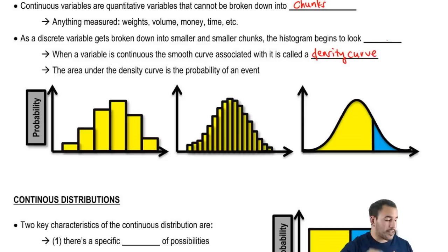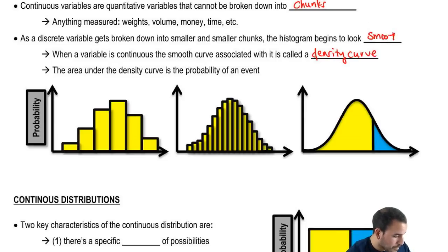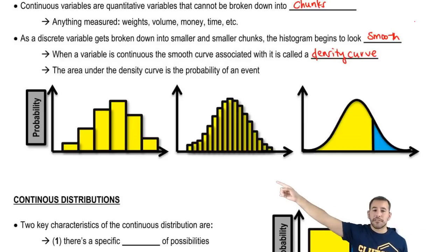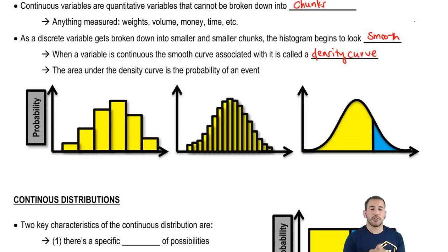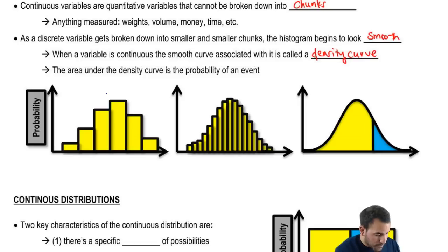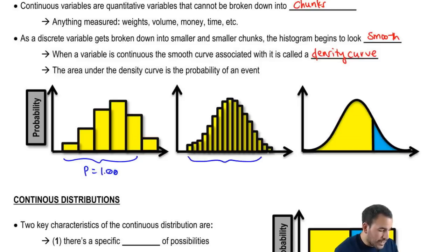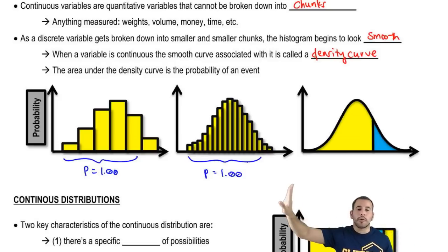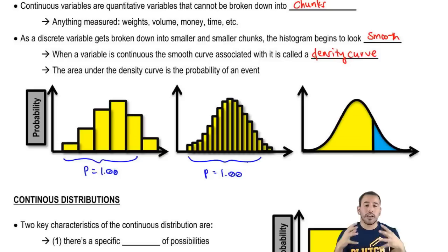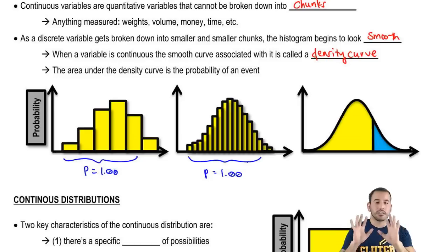When a variable is continuous, the smooth curve associated with it is called a density curve. As you get into smaller and smaller chunks, it begins to look smooth. The area under this density curve is the probability of any particular event. With discrete random variables, even though we have a bunch of different chunks, all those probabilities should add up to 100%. Because discrete random variables represent all possible outcomes, the probability associated with each outcome is between 0 and 1, and once we add everything up, that's all the outcomes — the sample space — with a total probability of 1.